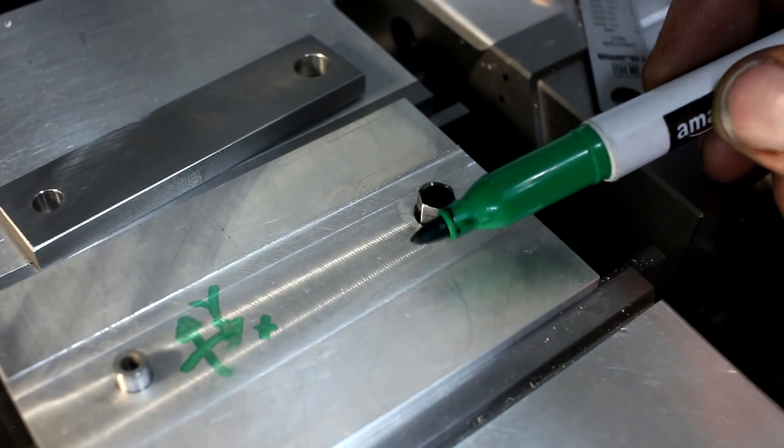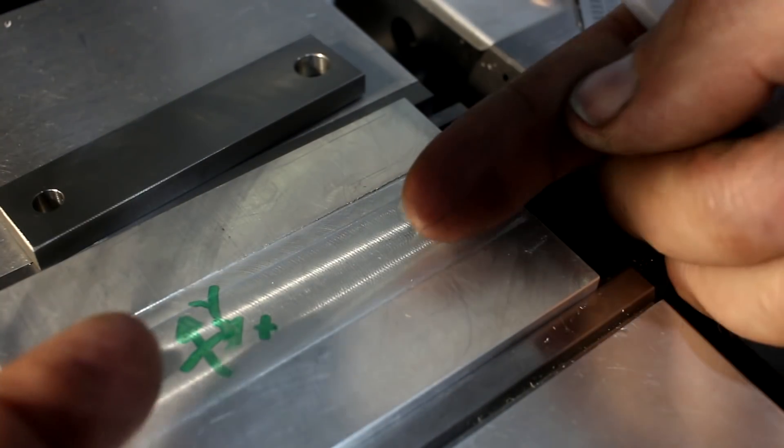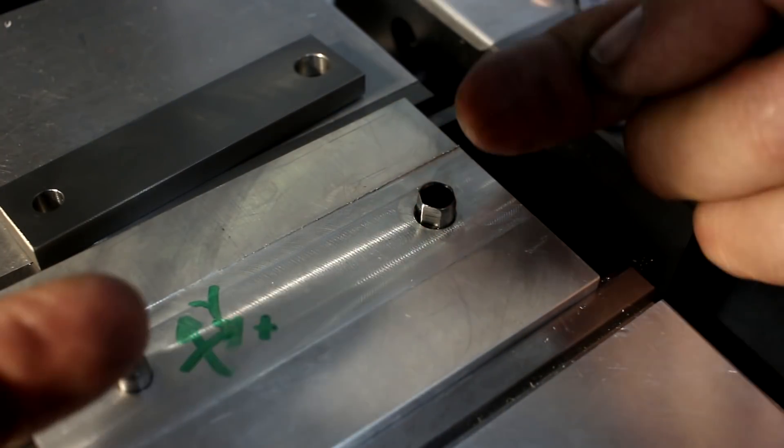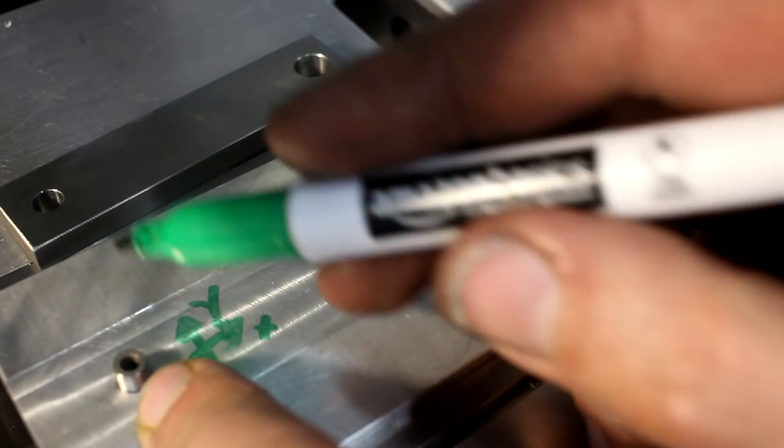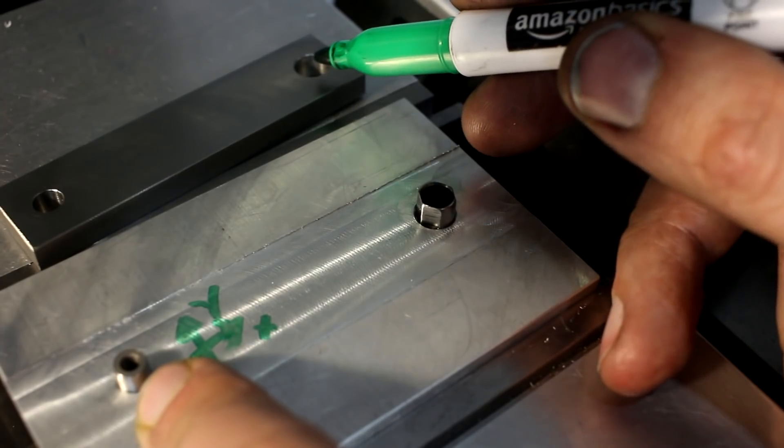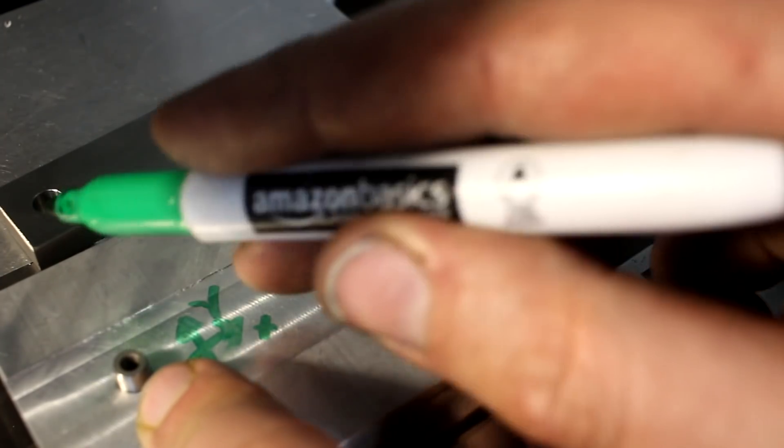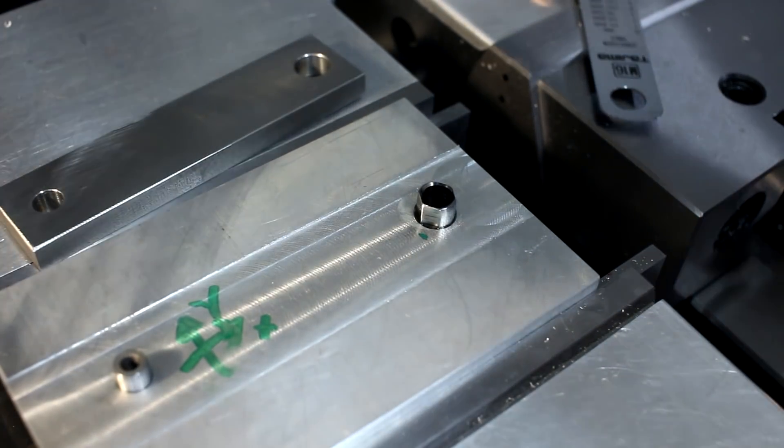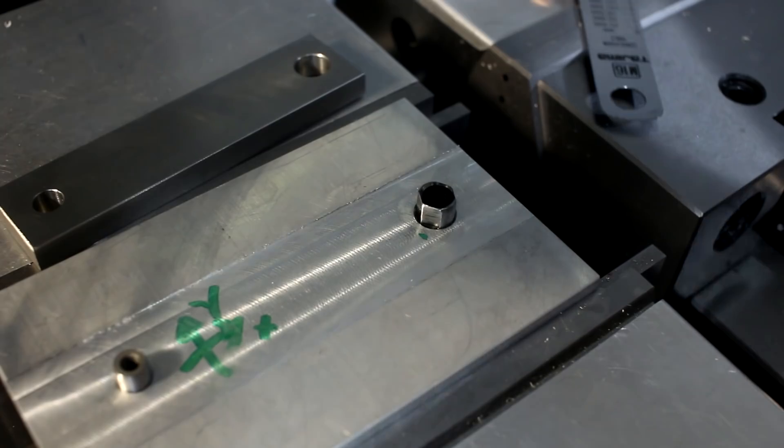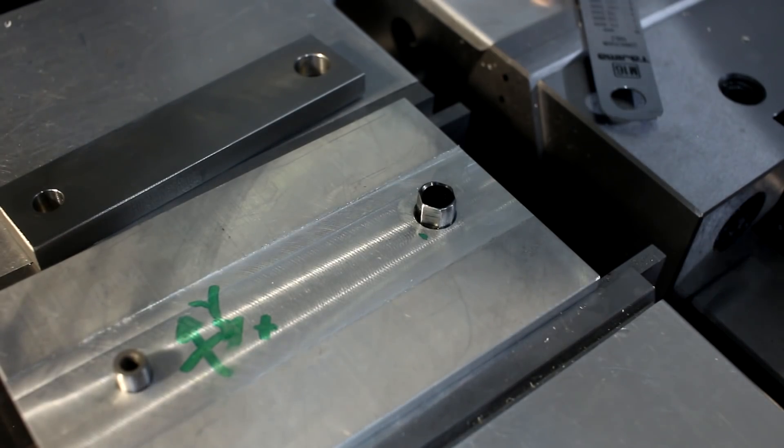In Y it's not a problem because that constrains the rotation of the part. But in X it's over-constrained because it's depending that the drilled distance in the part and on the fixture is always dead nuts the same. If not, you don't get the part on or only with force. Means a hammer. You don't want to hammer on a fixture.